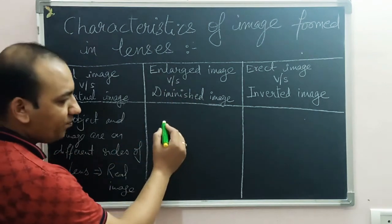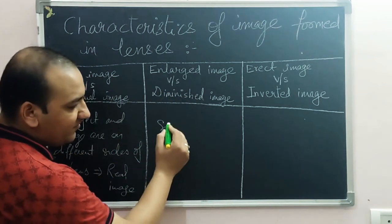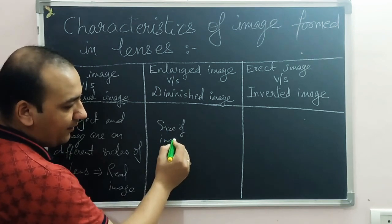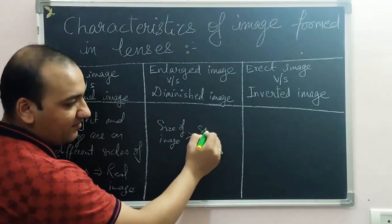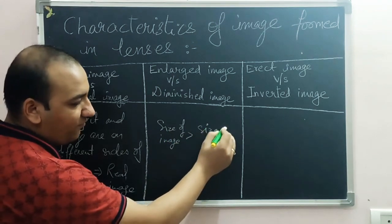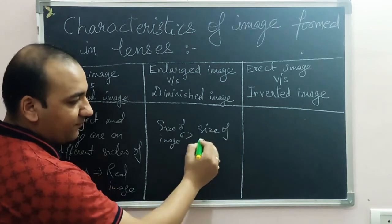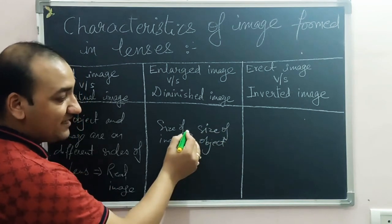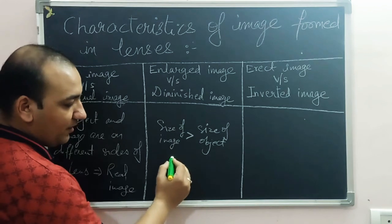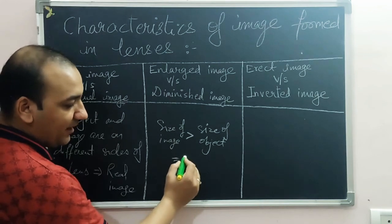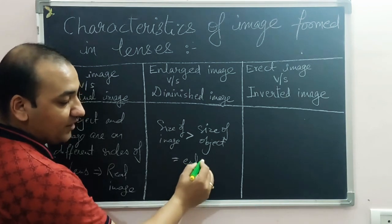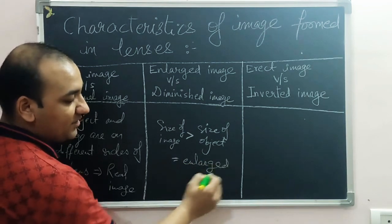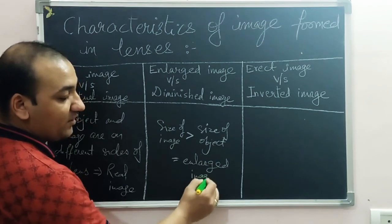For enlarged versus diminished images: if the size of the image is greater than the size of the object, it is an enlarged image. Conversely, if the image is smaller than the object, it is a diminished image.